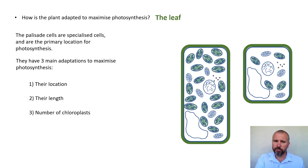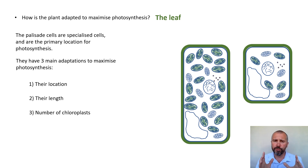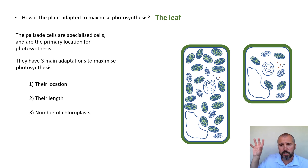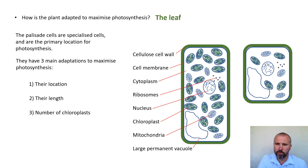The third adaptation is the number of chloroplasts. Comparing a normal plant cell to a palisade cell, there are far, far more chloroplasts in the longer palisade cell. Chloroplasts — if you're unsure — are the slightly darker, green, rugby-ball-shaped objects inside the cell.